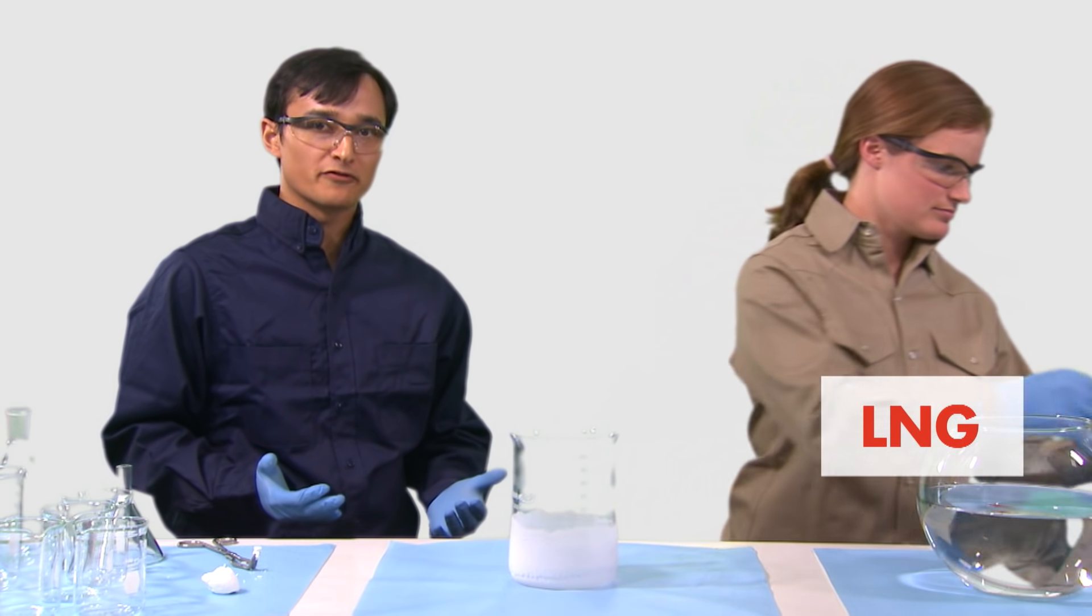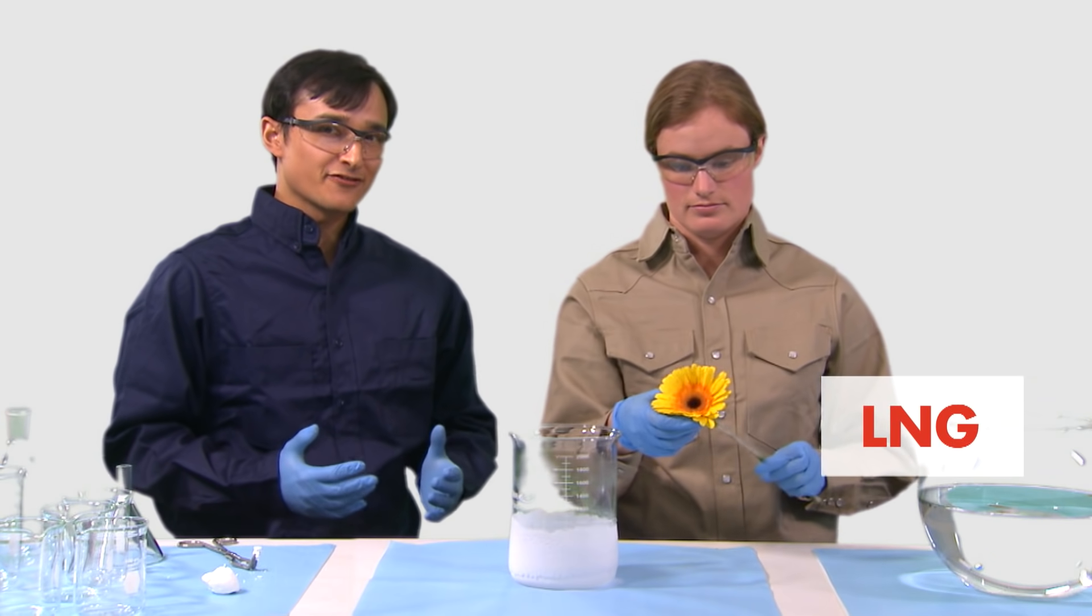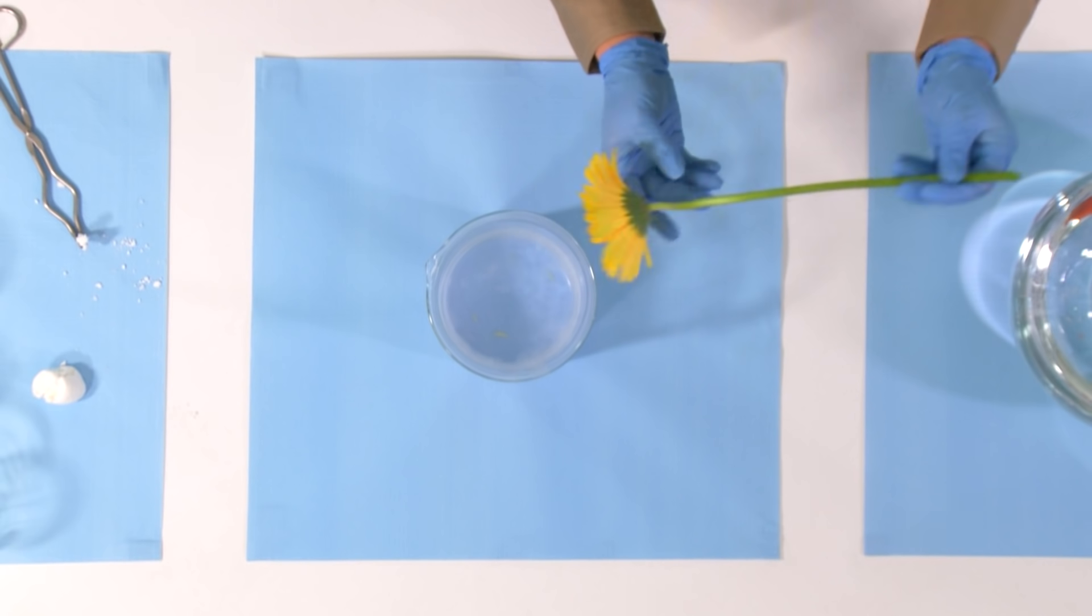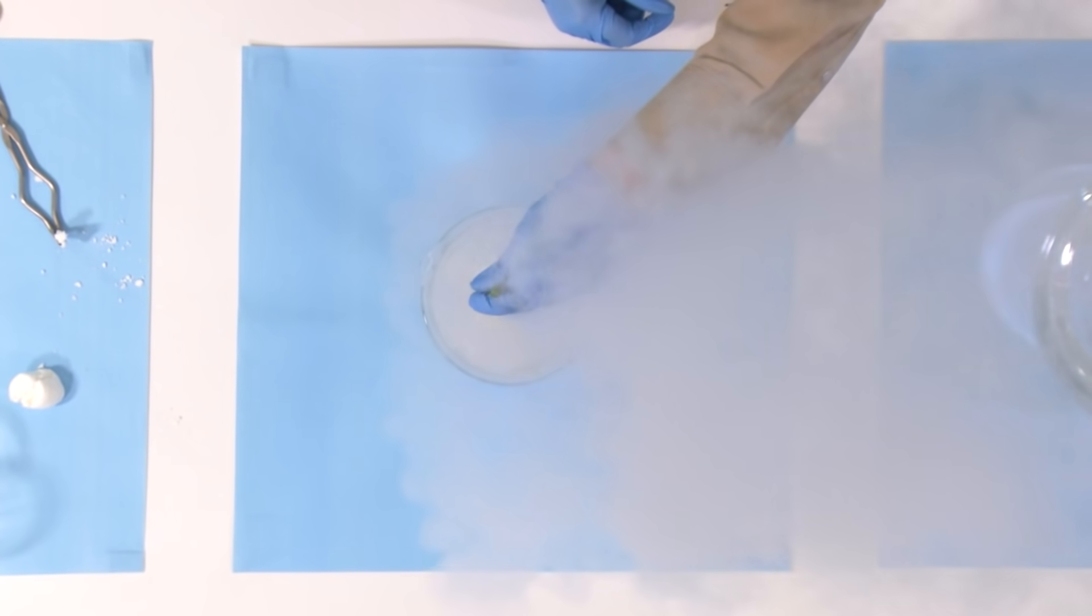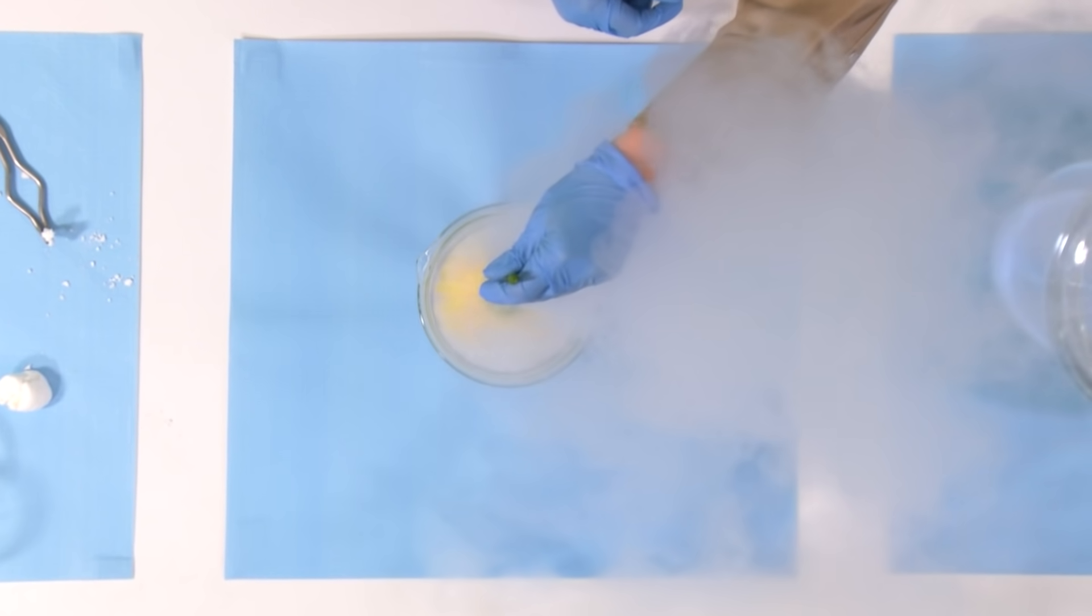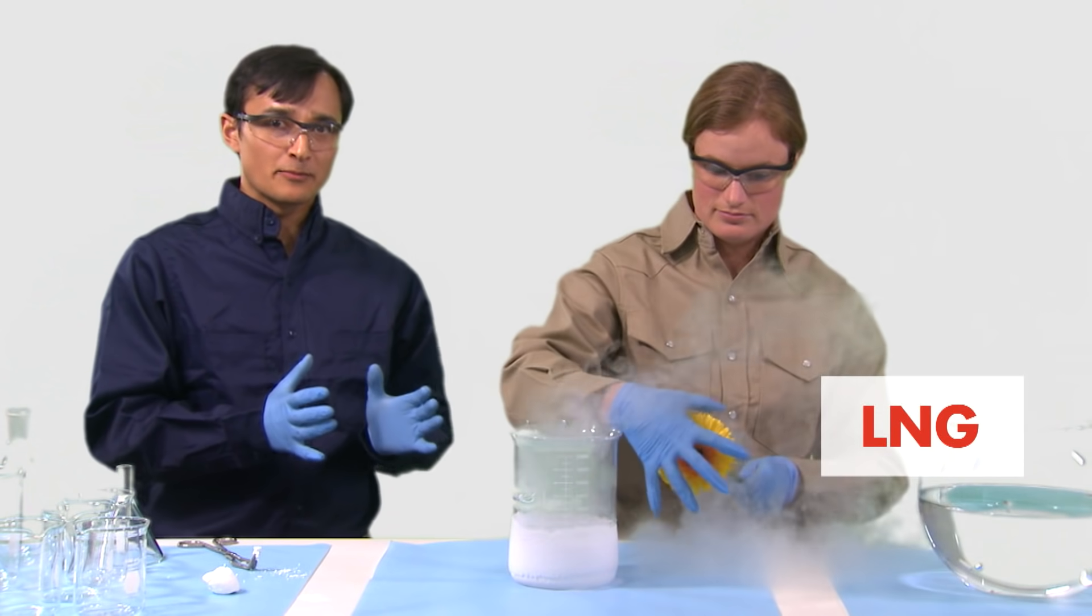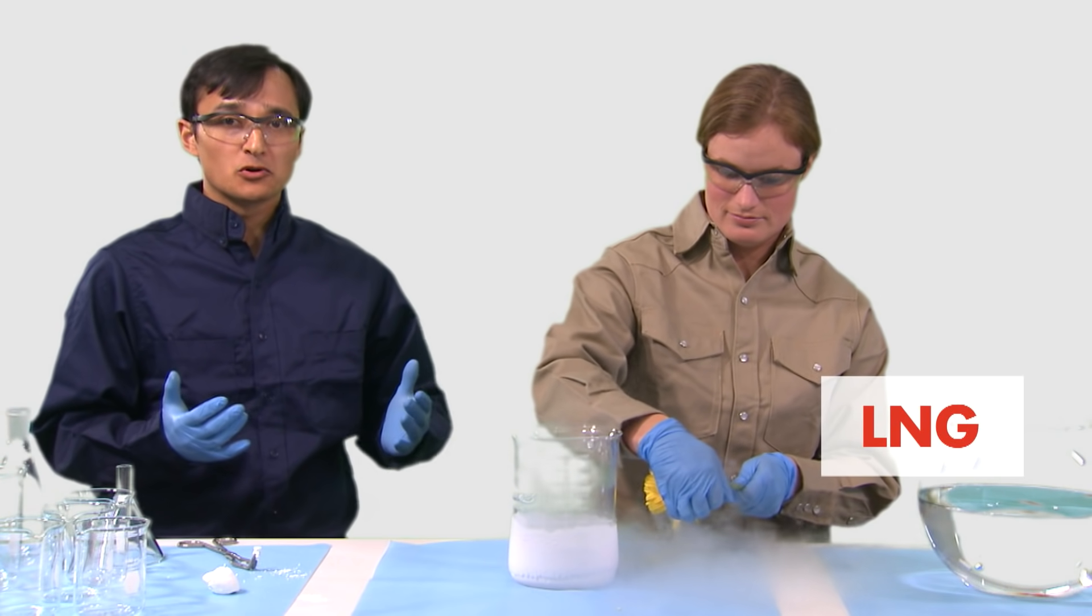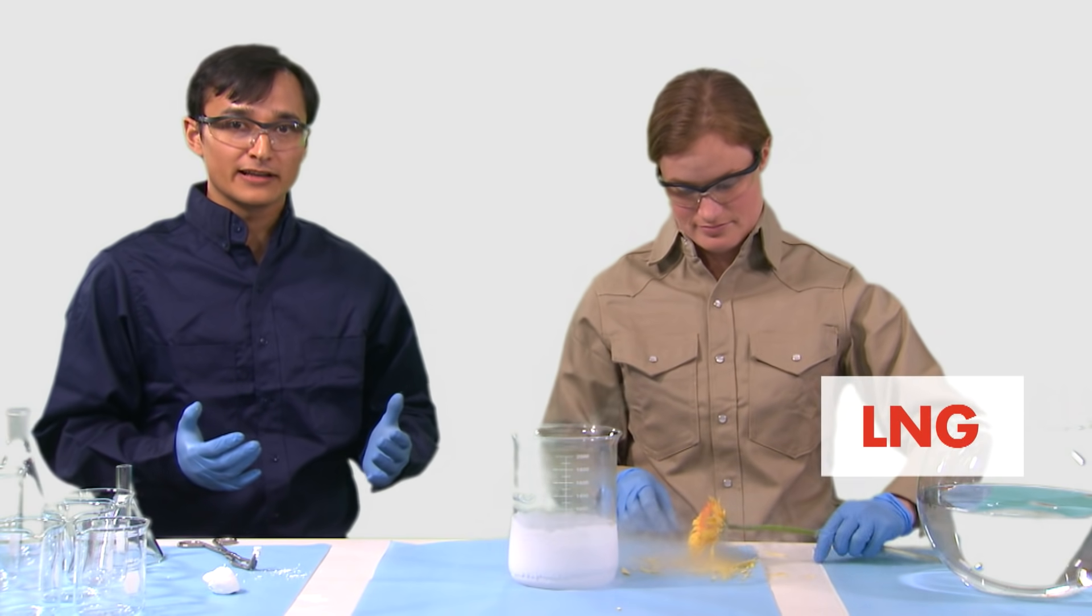Some things become brittle when frozen in LNG. This lovely fresh cut daisy will become stiff and brittle when Mariah dips it in LNG. As she crushes the flower, it breaks as though it was made out of glass. Because we are aware of this phenomena, special metals and materials are used to contain and handle LNG.